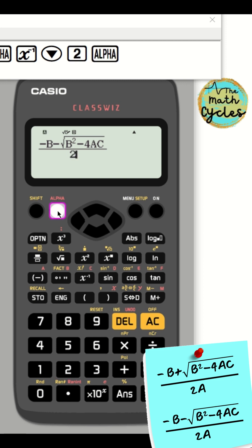Then press the down key and click 2, then alpha A. Now click equals to get the first root.